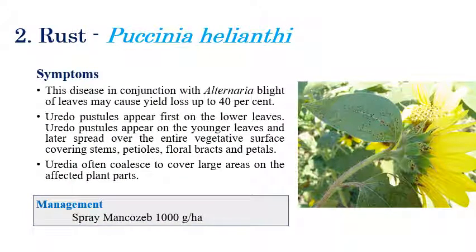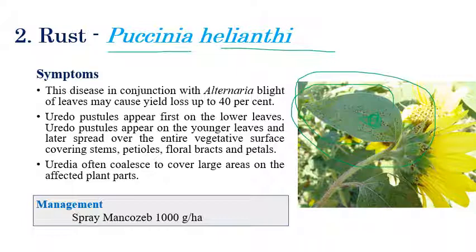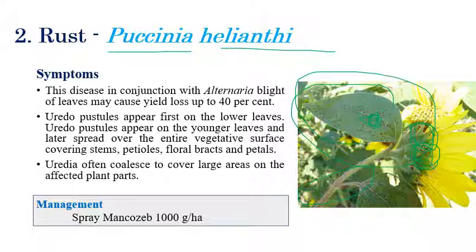The second disease is rust, caused by Paxenia helianthi. On the right side, we can see brown or red color pustules initially appearing on the lower surface of leaves. In later stages, symptoms slowly extend to younger and upper leaves. In advanced stages, the disease spreads to stem regions, floral bracts, and even petals.